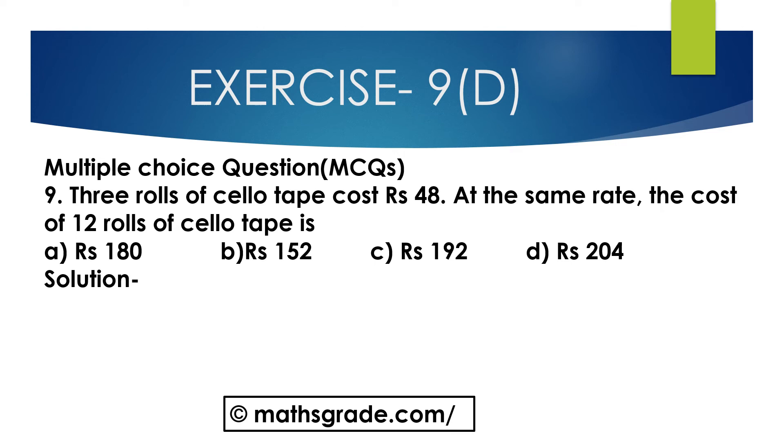Now, we will solve question number 9. Multiple choice questions. 3 rolls of cello tape cost 48 rupees. At the same rate, the cost of 12 rolls of cello tape is. The options are 180 rupees, 152 rupees, 192 rupees and 204 rupees. Which option is correct, we have to find out. 3 rolls of cello tape cost 48 rupees.